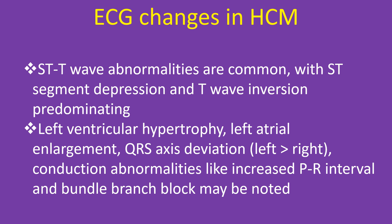ECG changes in HCM: ST-T wave abnormalities are common, with ST segment depression and T wave inversion predominating. Left ventricular hypertrophy, left atrial enlargement, QRS axis deviation (left more than right), and conduction abnormalities such as increased PR interval and bundle branch block may be noted.